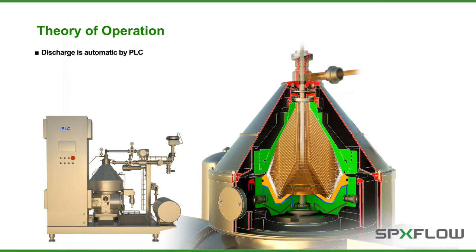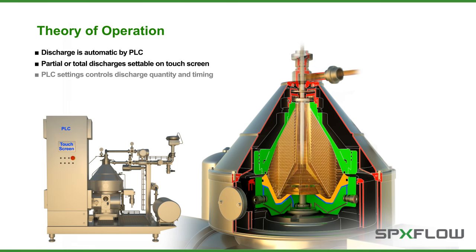Various automatic independent working cycles may be selected to perform partial and or total discharges during the separation and clean-in-place functions. Using settings within the PLC, it is possible to regulate the discharge quantity, time between discharges, and the combination between partial and total discharges.